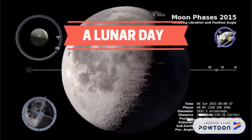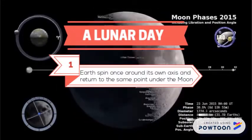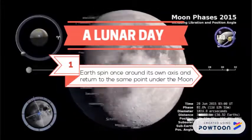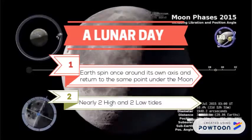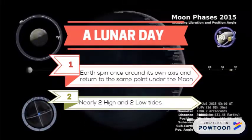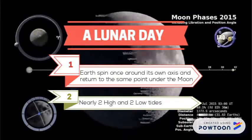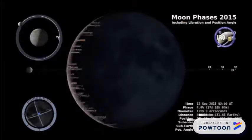So what is a lunar day? A lunar day happens when the earth spins once around its own axis and returns to the same point under the moon. It creates nearly two high tides and two low tides.